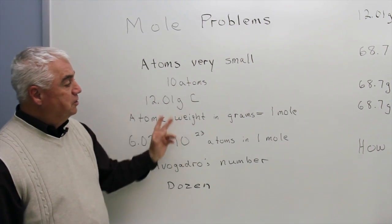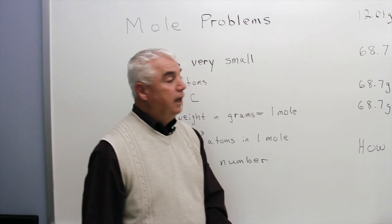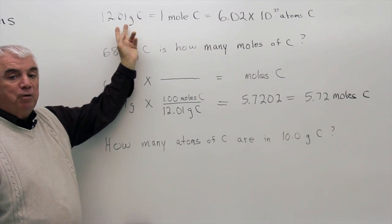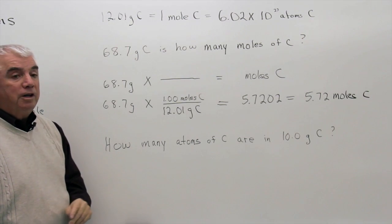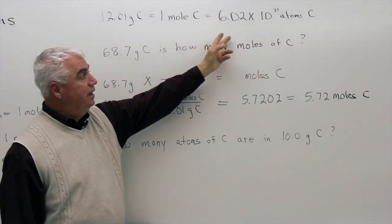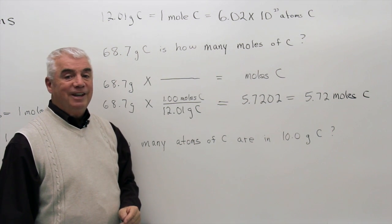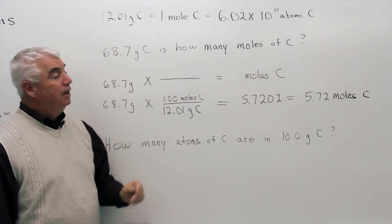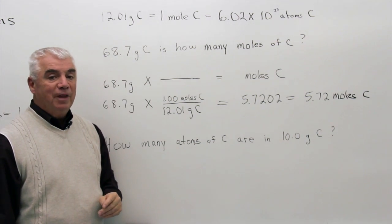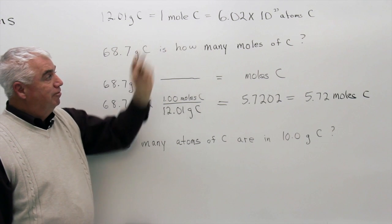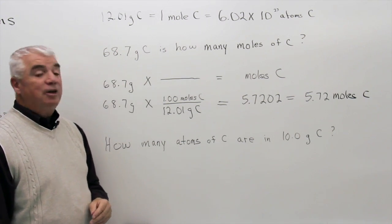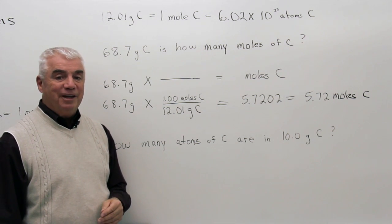Let's summarize these concepts for carbon. If we place the atomic weight in grams — 12.01 grams of carbon — it's equal to one mole of carbon, equal to 6.02 times 10 to the 23rd atoms of carbon. We've written it here in equation form. And anytime we have facts like this, we can derive factors, which means we can use the factor unit method.